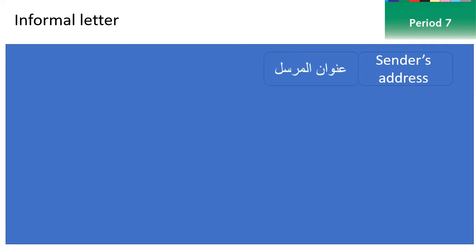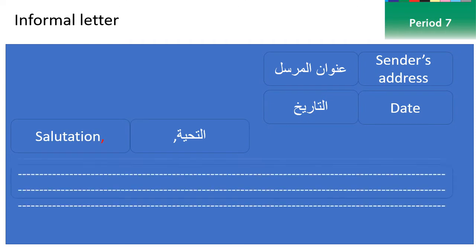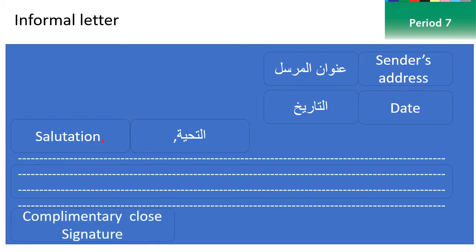The first part should be written at the top right corner of the page, and it includes the sender's address — meaning your address as the writer. Under this address comes the date, then the salutation, then the body text, and finally the complementary close and signature. These positions are fixed and cannot be changed.